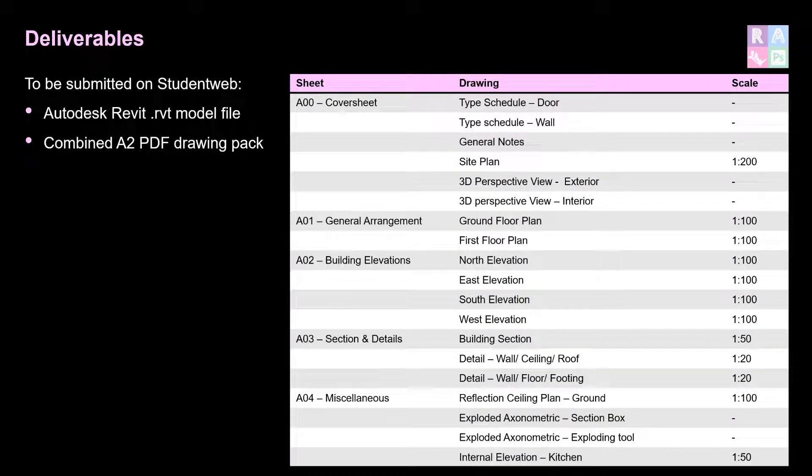There will be a total of five sheets, beginning with a cover sheet which includes type schedules for doors and walls, general notes, site plan at 1:200, and two 3D perspective views — one for interior and one for exterior.